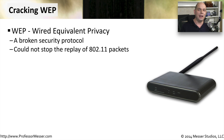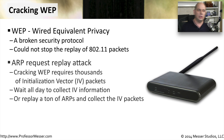WEP encryption allowed you to replay information using exactly the same key, so it was very easy for someone to collect information and then send that information back out again. To perform a crack of WEP encryption, you needed to gather a lot of initialization vector packets — these are packets normally sent back and forth when a system is connecting to the wireless network. When you're trying to gather thousands of these, you need to create your own method, and being able to send ARP requests across the wireless network allowed you to build a large group of initialization vector packets and store all of that data.